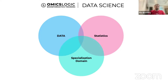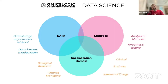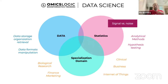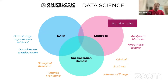Data science, as you know, is the intersection between data, statistics, and some specialization domain. When we talk about statistics, we're typically referring to the balance between signal and noise in our data. Sometimes we do an experiment and every once in a while we see some interesting pattern — maybe the gene we are interested in is sometimes expressed, sometimes not expressed.